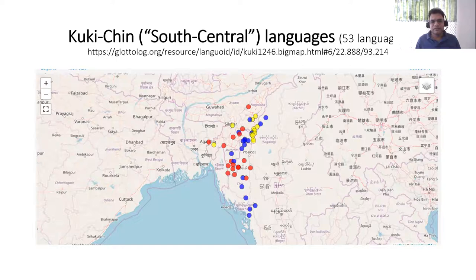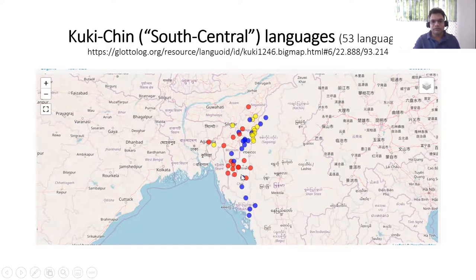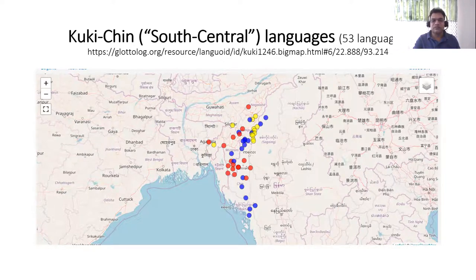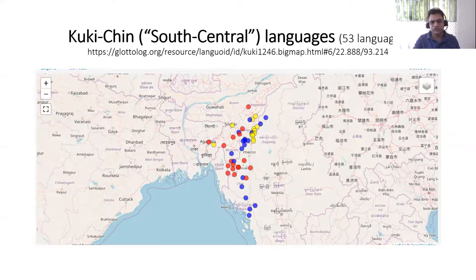In this map you can see the spread of Kuki-Chin languages, largely in northeast India on the border with Bangladesh and somewhere in Myanmar. On the title of the slide, you can see Kuki-Chin is also called South Central, partly because many Kuki-Chin speakers consider the name Kuki-Chin as pejorative. So some Tibeto-Burman scholars, especially Scott DeLancey, came up with this new term South Central for the Kuki-Chin subgroup.